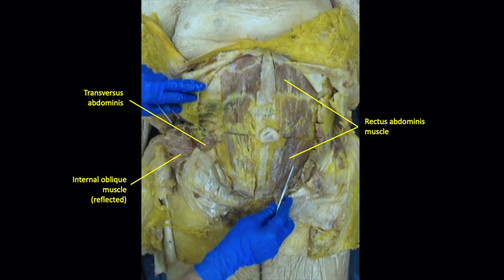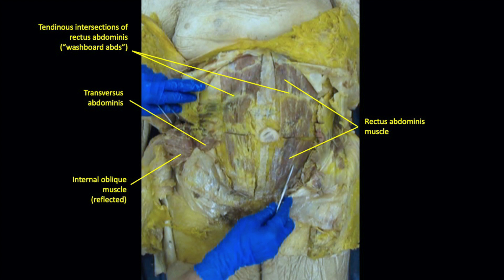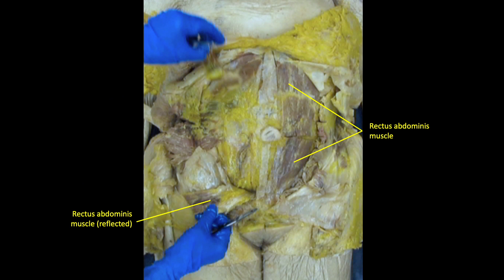Also visible is the rectus abdominis muscle, contained within the aponeurosis of the oblique and transversus muscles — the rectus sheath. Note the tendinous intersections of the rectus abdominis, which give rise to the washboard abs seen in well-exercised individuals. The lateral margin of the muscle is referred to as the linea semilunaris, visible on the surface of athletes. Reflection of the rectus abdominis reveals the posterior rectus sheath and the inferior epigastric artery, an important landmark when surgeons are repairing an inguinal hernia.